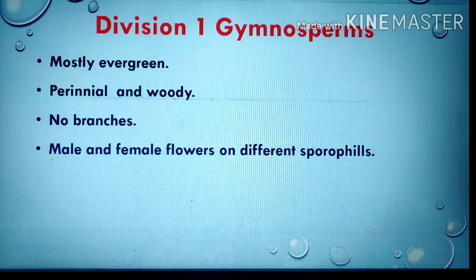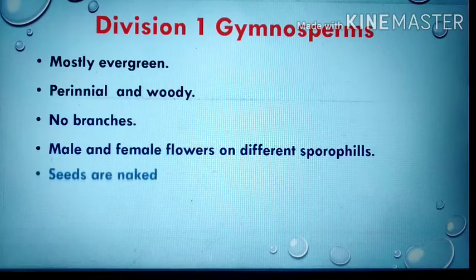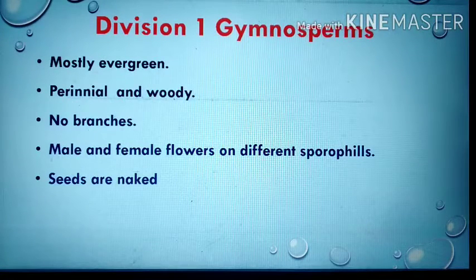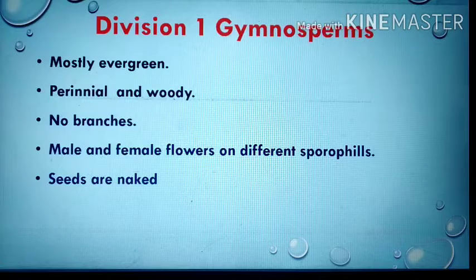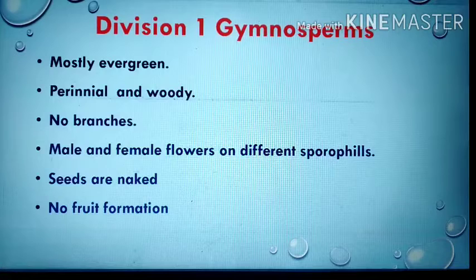Microsporophylls and megasporophylls are present: on the microsporophylls the male gametes are produced, and on the megasporophylls the female gametes are produced. The seeds are naked — the main feature of gymnosperms. 'Gymnos' means naked and 'sperma' means seeds; the seeds are not enclosed within the ovary.